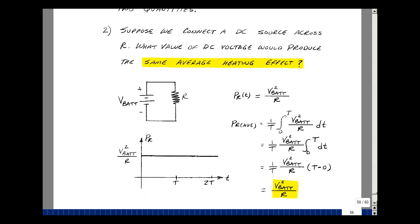Suppose we take a DC source and connect it across the resistance from our last video. What value of DC voltage would produce the same heating effect as our phasor that we apply? Let's calculate the power dissipated.